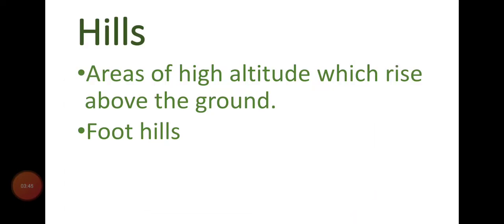Our next topic is hills. Hills are smaller than mountains. They are areas of higher altitude that rise above the ground but are smaller than mountains. Hills are made of hard rock and are very resistant to erosion. Erosion is the removal of soil or breakdown of rocks due to fast-moving air or water. Some hills are under the great mountain ranges and these are known as foothills.